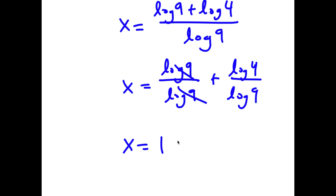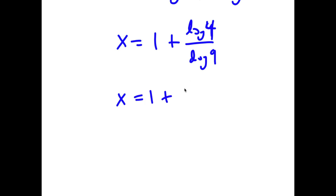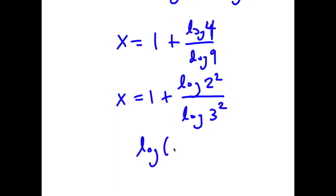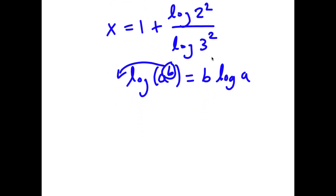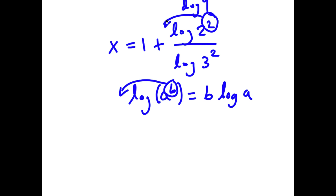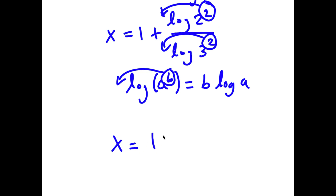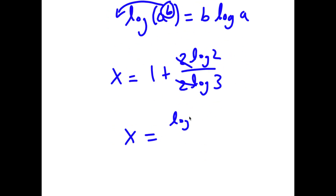So these two cancel out, and now I have x is equal to 1 plus log 4 over log 9. Now I can rewrite log 4 as log of 2 squared, and I can rewrite log 9 as log of 3 squared. And if I have something in the form log of a to the power of b, I can move this exponent b to the front. So now I can move 2 to the front for each. So now I have x is equal to 1 plus 2 log 2 over 2 log 3. If I cancel these twos out, I get x is equal to log 2 over log 3.